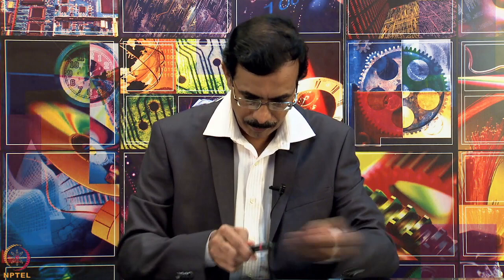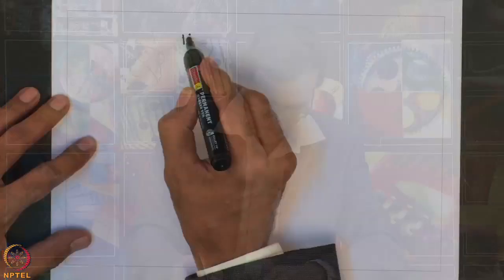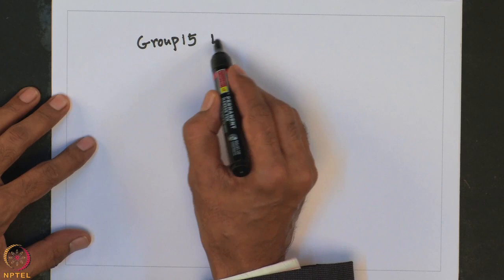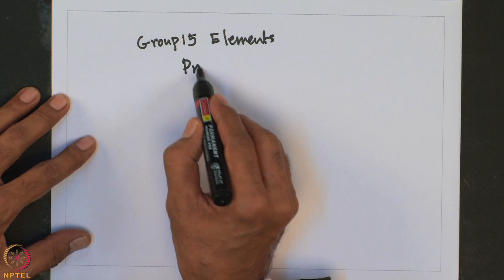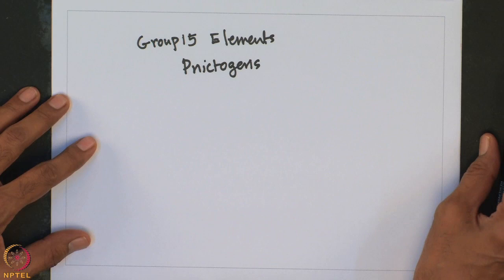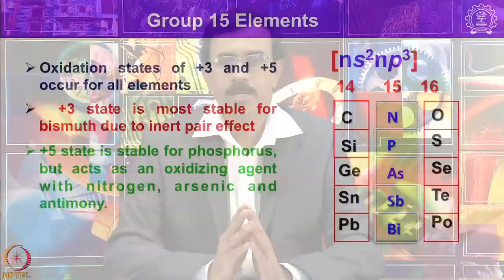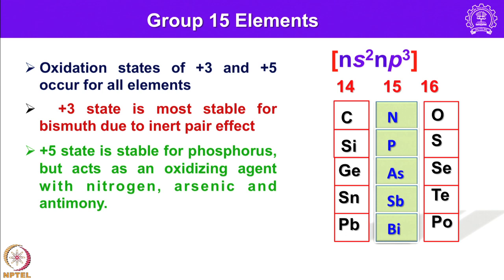Group 15 elements are essentially called as nitrogens. We have in group 15: the first element is nitrogen, next phosphorus, arsenic, antimony, and bismuth. They have the electronic configuration of ns² np³, that is they have 5 electrons in their valence shell. As a result, group 15 elements show oxidation states of plus 3 and plus 5.